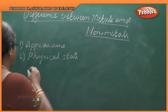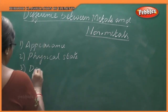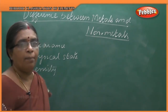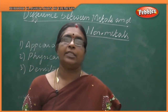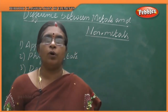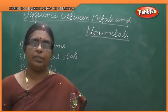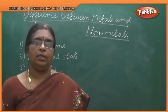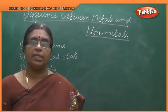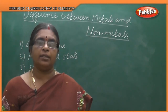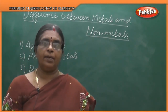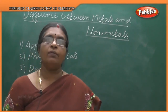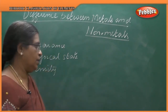Next is density. Metals have high density — exceptions are sodium and potassium. Whereas non-metals have low density.